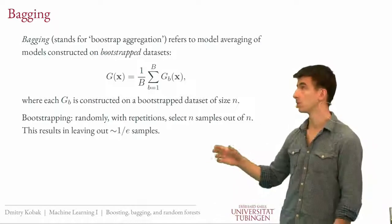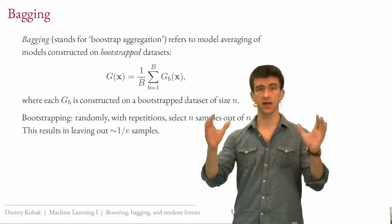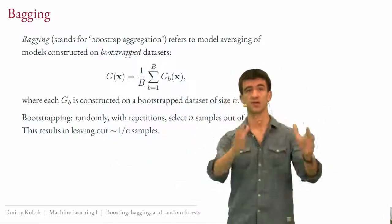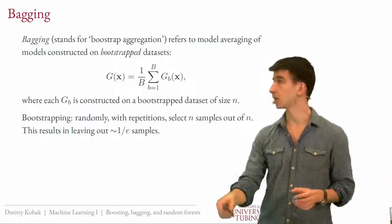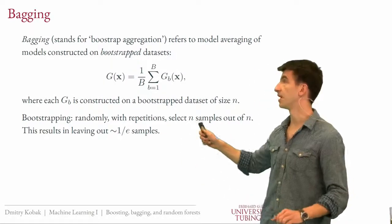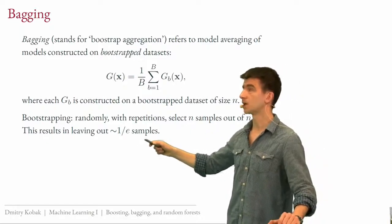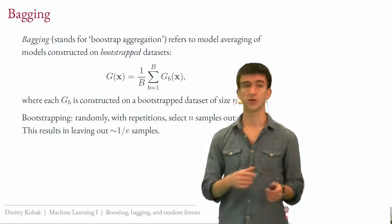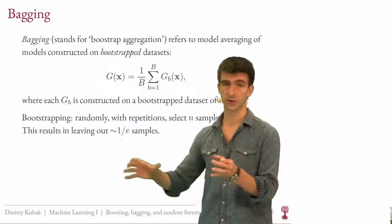The bootstrapped sample has the same size as the original but contains repetitions. This is very useful in statistics. The intuition of bagging: take your dataset, generate several bootstrapped samples, build a model on each — they'll all be slightly different — and then average. One can show as an exercise that on average you will leave out around one-third of samples (1/e ≈ 30%) on each bootstrapped iteration, so two-thirds of samples get into each bootstrapped iteration, a different two-thirds each time.